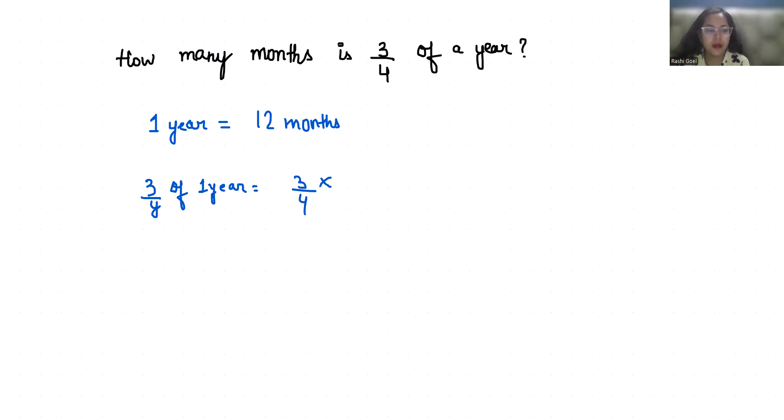And one year, how many months? 12. So we can cancel out. In table of 4, 12 comes at 3 place. Now 3 times 3 is 9.